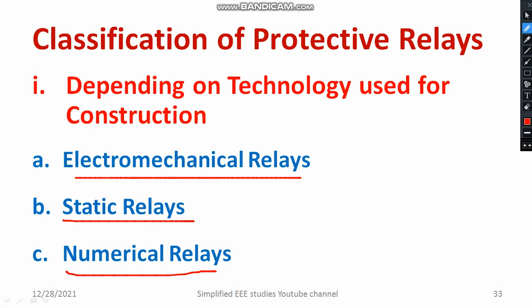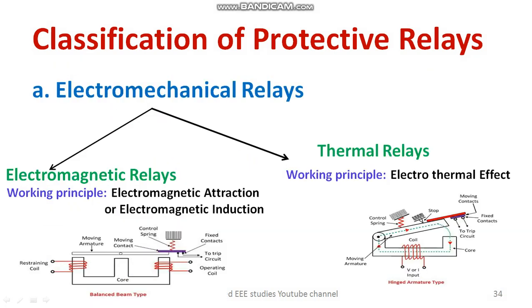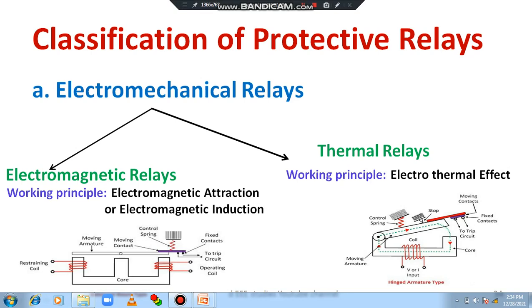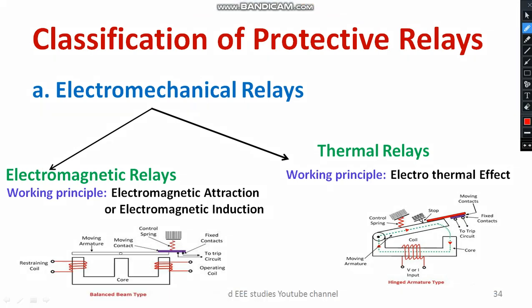Electromechanical relay can be broadly divided into two types: electromagnetic relay and thermal relay. It is a conventional type of relay with rugged construction, and you need to know the magnetic effect of electricity. The working principles of electromagnetic relay are: number one, based on the electromagnetic attraction principle.